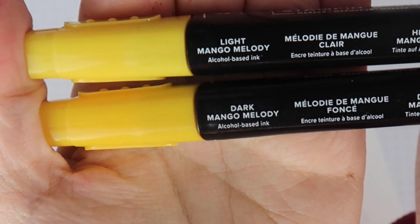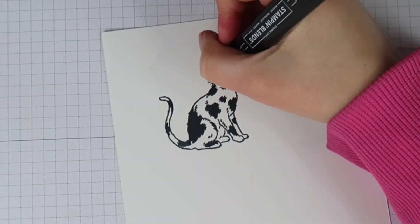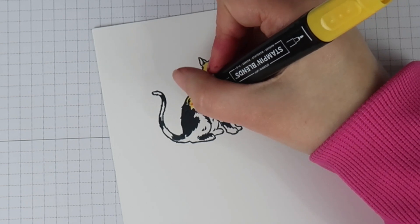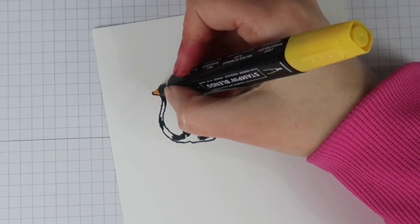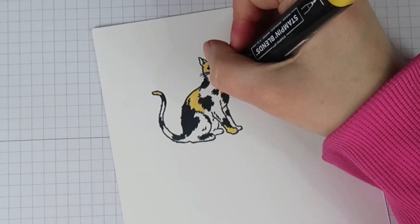And then I wanted to make a calico cat. I really wanted to make a calico cat. So I'm going to bring in my light and dark Mango Melody Blends alcohol markers. You can use whatever orange colors you have.